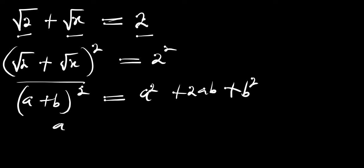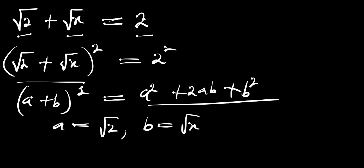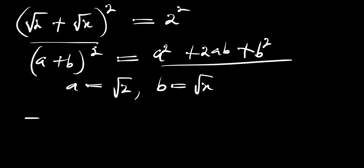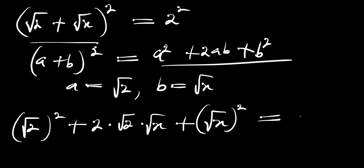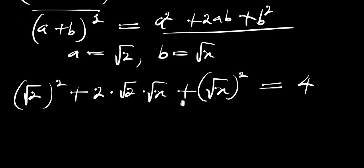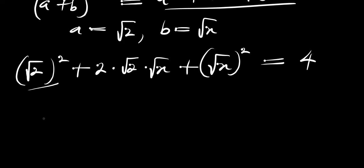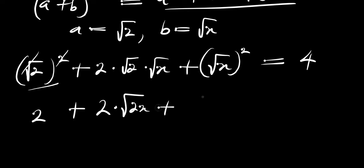From here our a equals root of 2 and b equals root of x. By making use of this identity, we are going to have (root of 2)² plus 2 times root of 2 times root of x plus (root of x)² equals 4. So (root of 2)² is 2, plus 2 times root of 2x, plus x equals 4.